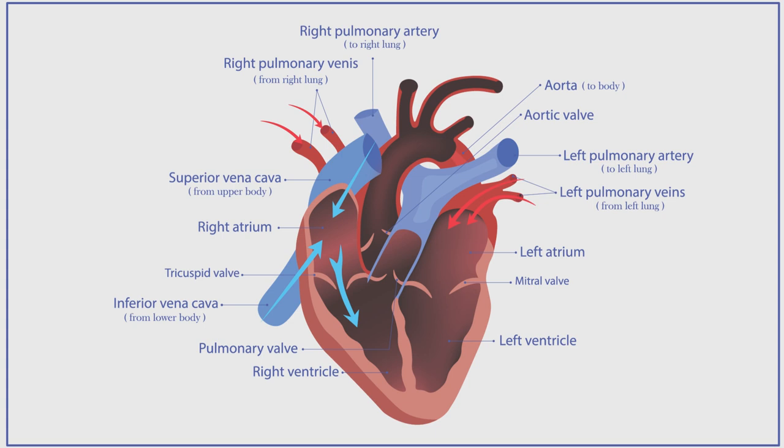The tricuspid valve opens to allow oxygen-deficient blood to flow into the right ventricle from the right atrium. Next, the left atrium sends oxygen-rich blood to the left ventricle through the mitral valve. The right ventricle then pumps the deoxygenated blood to the lungs via the pulmonary artery, which is responsible for transporting the blood to the lungs for oxygenation.